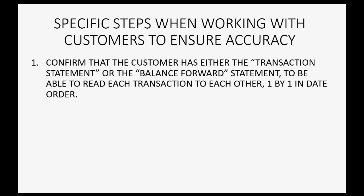So, what are the specific steps when working with customers to ensure accuracy? The first thing you have to do is confirm that the customer has either the transaction statement or the balance forward statement — two of the three types of statements from the previous video — and they have to have either one in order to be able to read each transaction to each other one by one in date order.